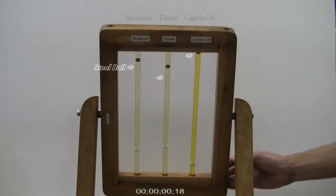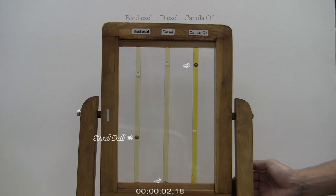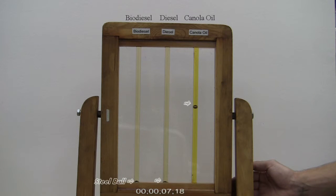Biodiesel typically has a slightly higher kinematic viscosity when compared with petroleum diesel, around 4.5 centiStokes for biodiesel and 3 centiStokes for number 2 diesel.